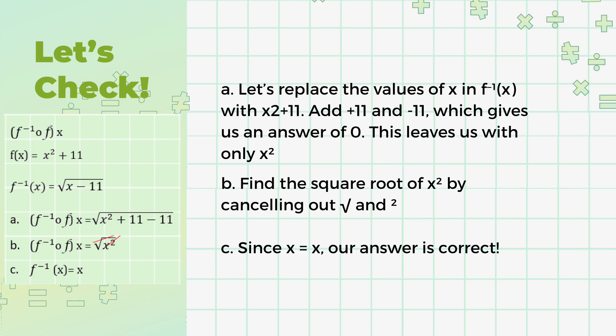Let's replace the values of x in f inverse of x with x squared plus 11. Next, we will add the similar terms — positive 11 and negative 11 — which gives an answer of 0. By doing so, only x squared will be left. Lastly, let's find the square root of x squared. Remember that when finding the square root of x squared, the variable simply cancels out the radical and the exponent of 2. This is because the inverse operation to squaring a number is finding its square root. Finding the square root of x squared is the same as asking what number or variable gives x squared when squared.